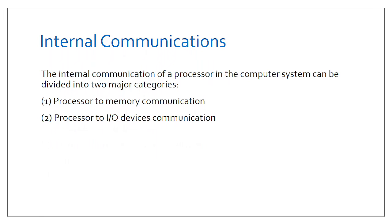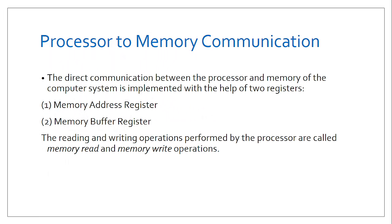The processor also needs to understand which input device is sending particular instructions, and how the processor should display or store them via the output devices. As communication happens between memory and the processor, we have two common types of registers: the memory address register, which labels or allocates locations so the CPU knows where instructions are stored, and the memory buffer register.